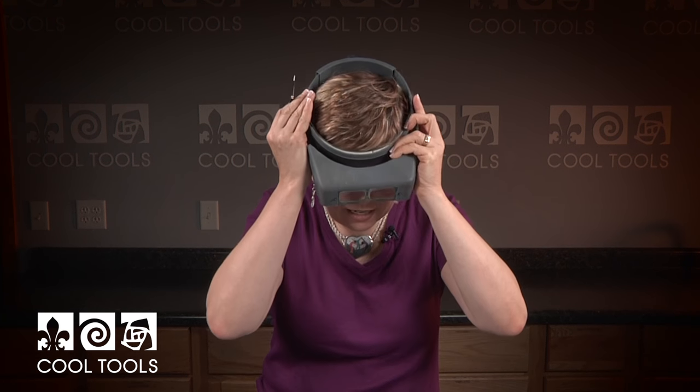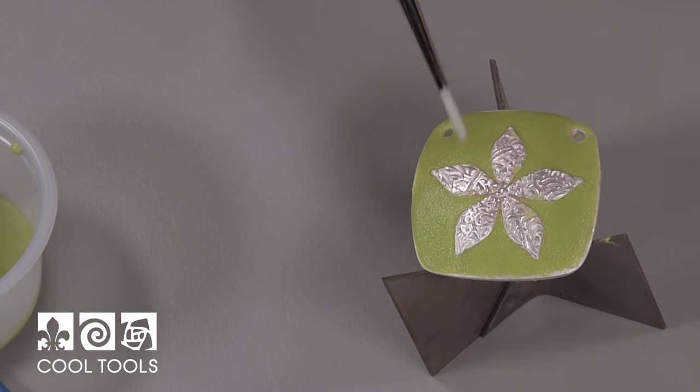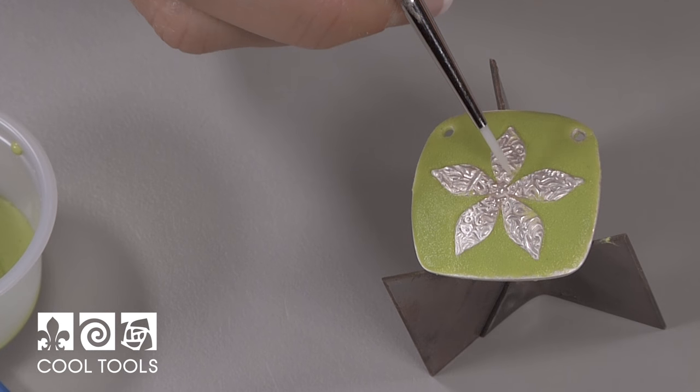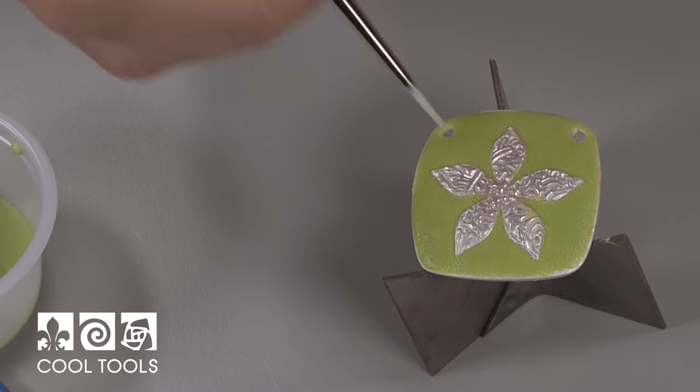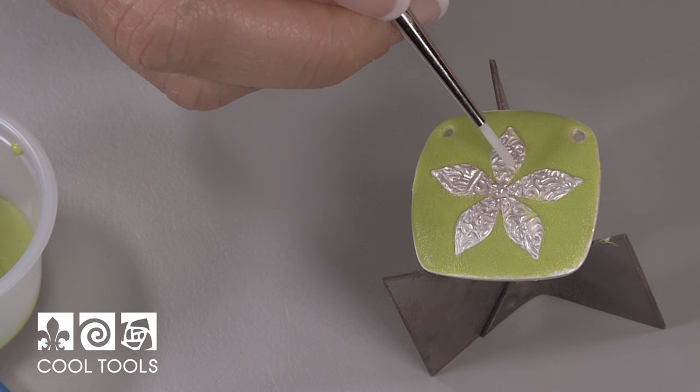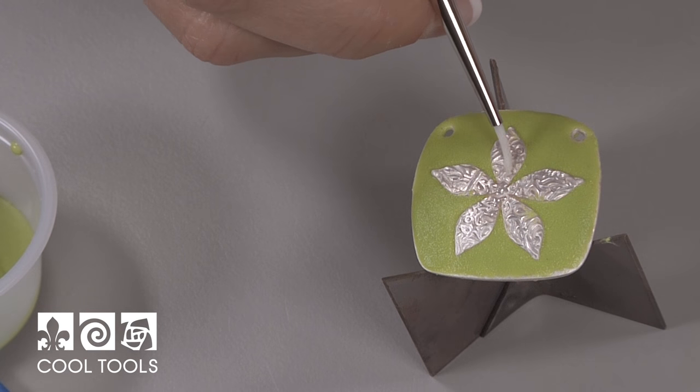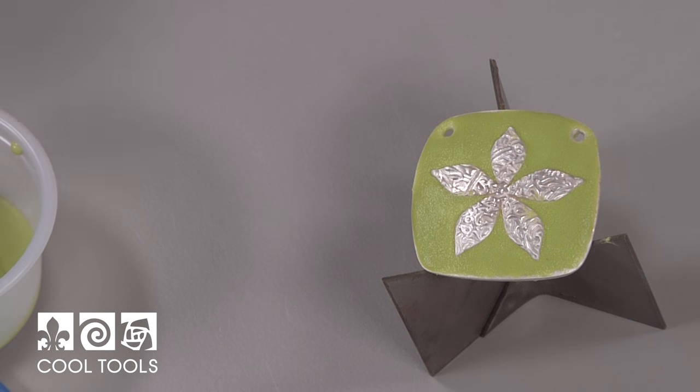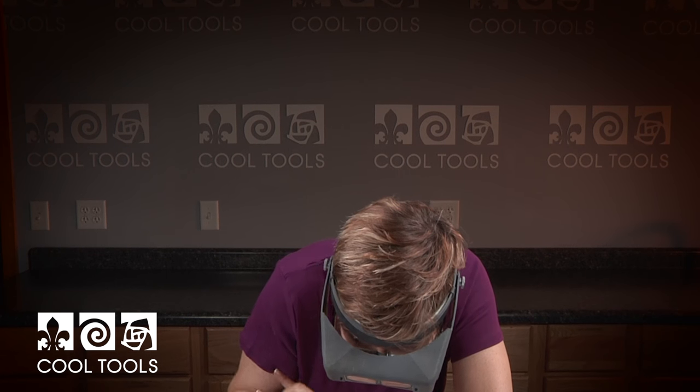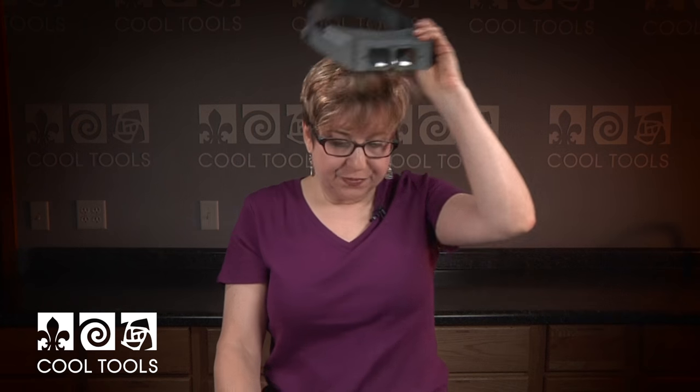So the last thing you do before you fire this is you need to examine it really closely. I'm going to go ahead and put on a magnifying visor. And I'm going to get really close in on this so that I can see all the little individual grains of enamel. And I want to make sure that there are no grains of enamel on my silver design. Because if those fire on there, once they're fired on, they're fired on forever. And that's ready to fire. I'll be back in a minute.